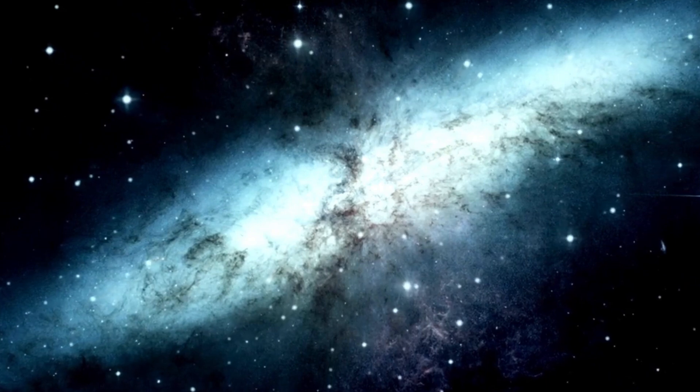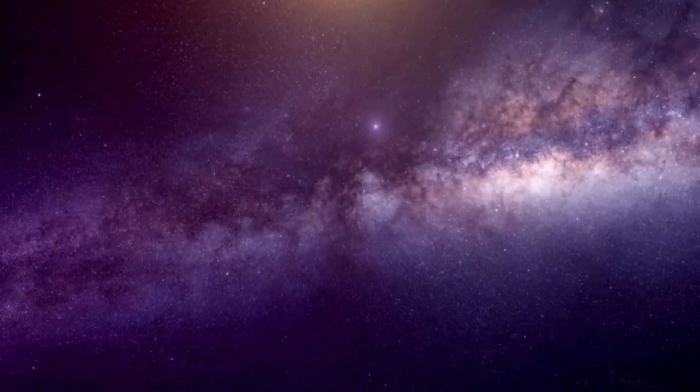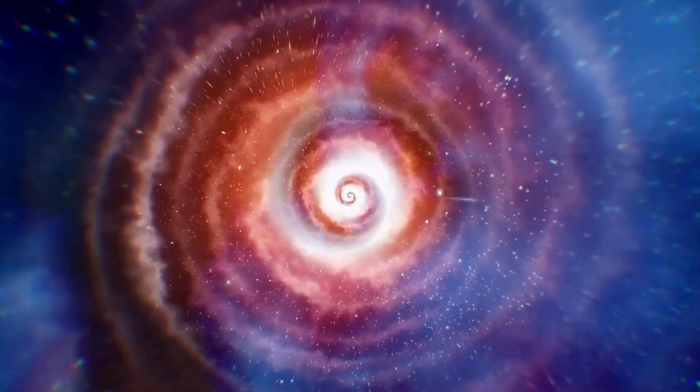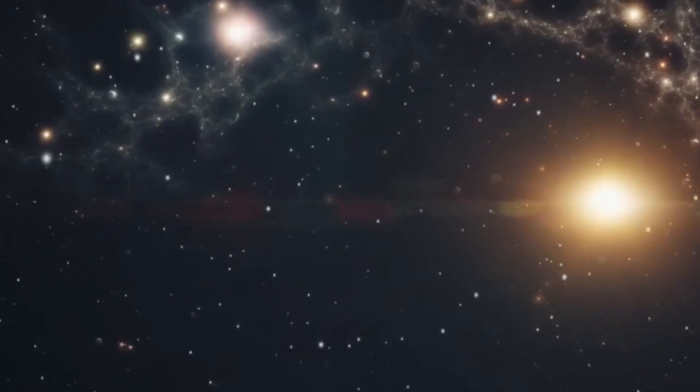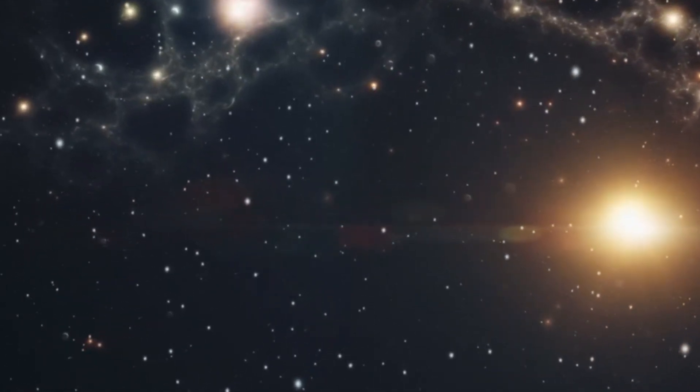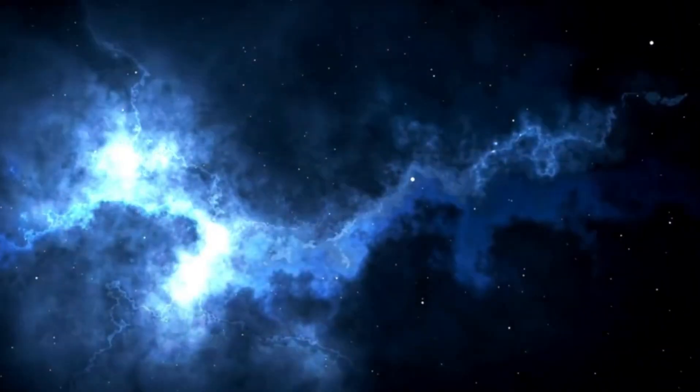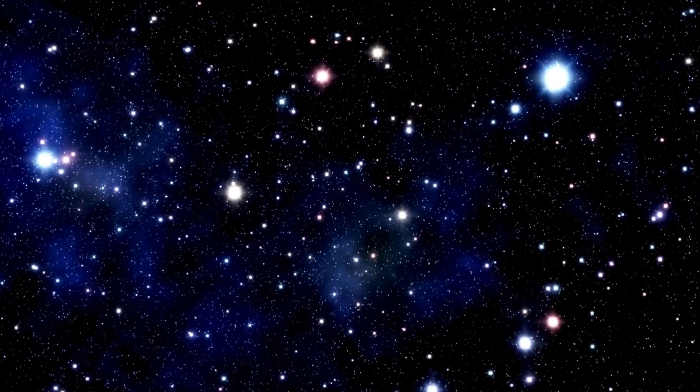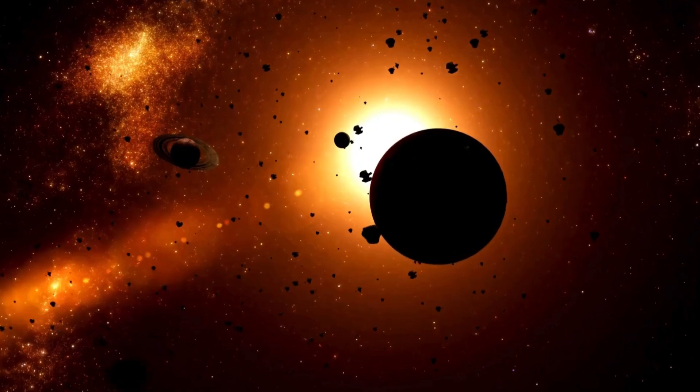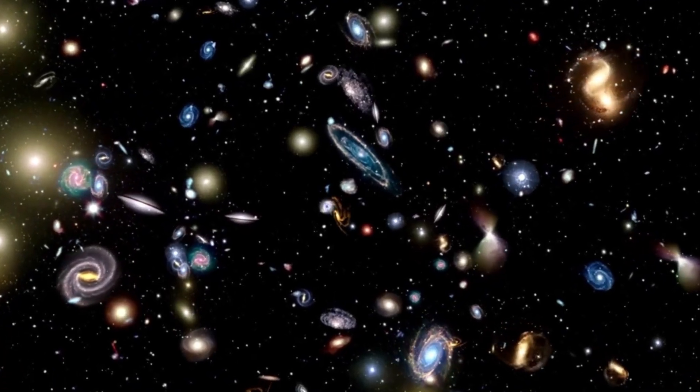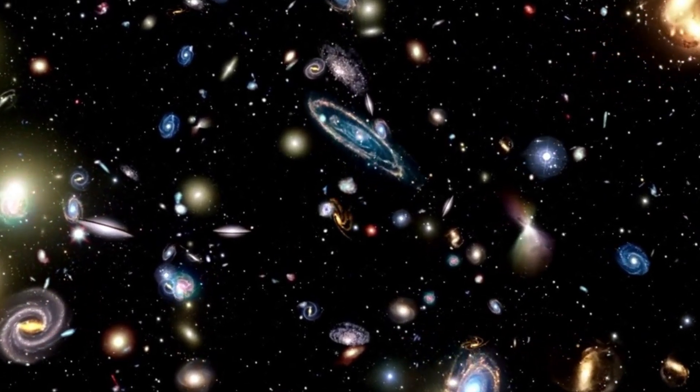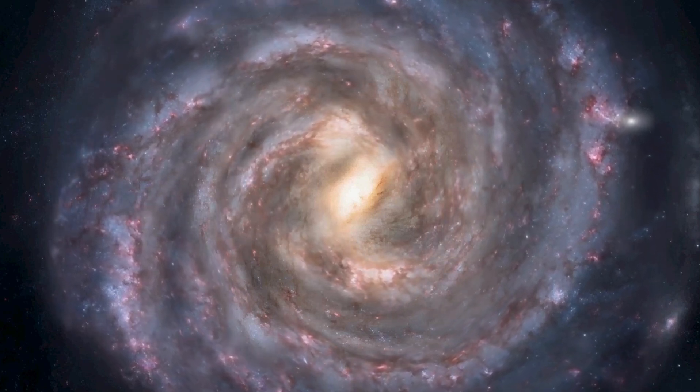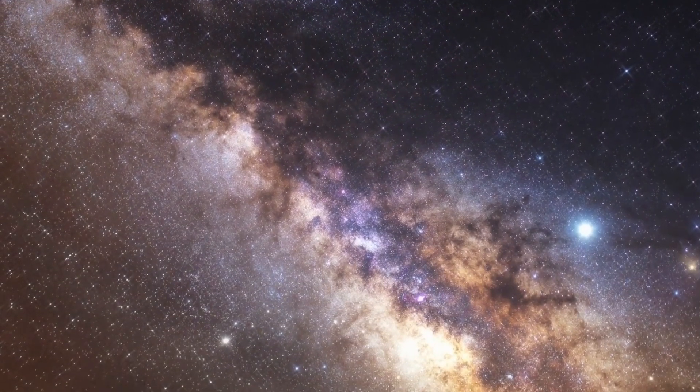The absence of moons within the confines of the alum galaxy adds another layer of intrigue to its already enigmatic nature. Moons, those celestial companions that commonly orbit planets or even dwarf planets within their respective systems, are a ubiquitous feature of galaxies throughout the universe. Yet within the expansive reaches of alum, this familiar presence is notably absent, prompting scientists to ponder the implications of this peculiar phenomenon. Moons play a crucial role in the dynamics and evolution of their parent bodies, influencing everything from tides to planetary stability. Their absence within alum raises a host of compelling questions about the galaxy's formation and development. Did alum once harbor moons that have since disappeared or been ejected from its gravitational grasp, or is there something inherent to the galaxy's composition or environment that has prevented the formation of these satellite bodies?